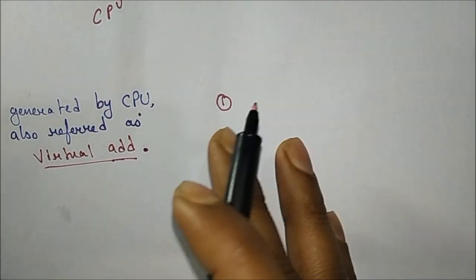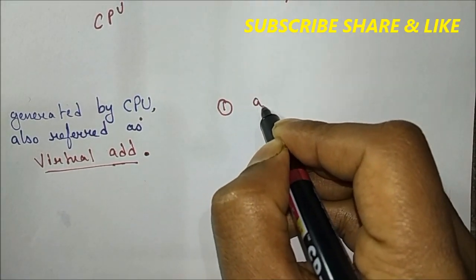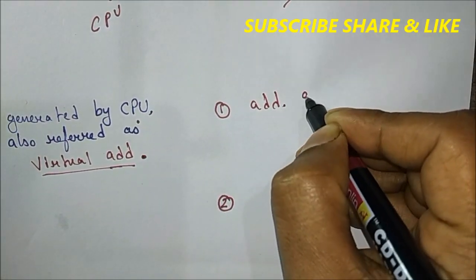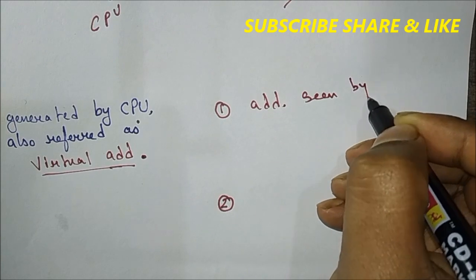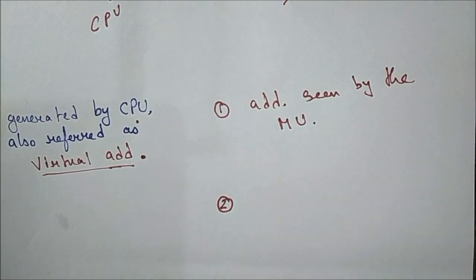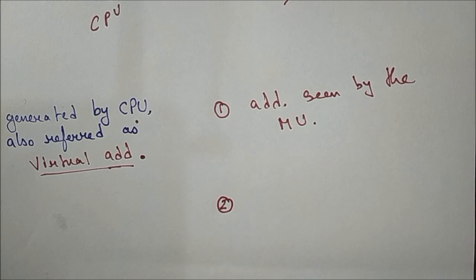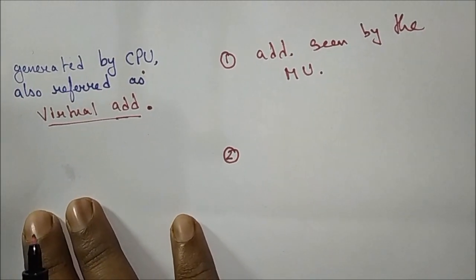For physical address, it is the address seen by the memory unit. What happens is the CPU generates the logical address, and in the middle there is a memory management unit which converts the logical address into the physical address.